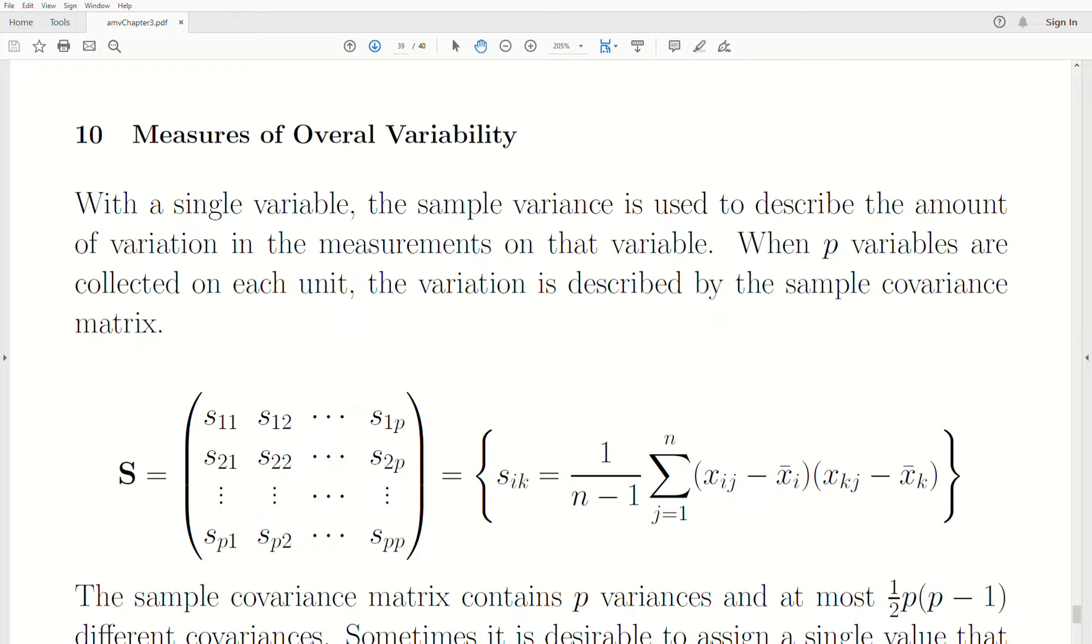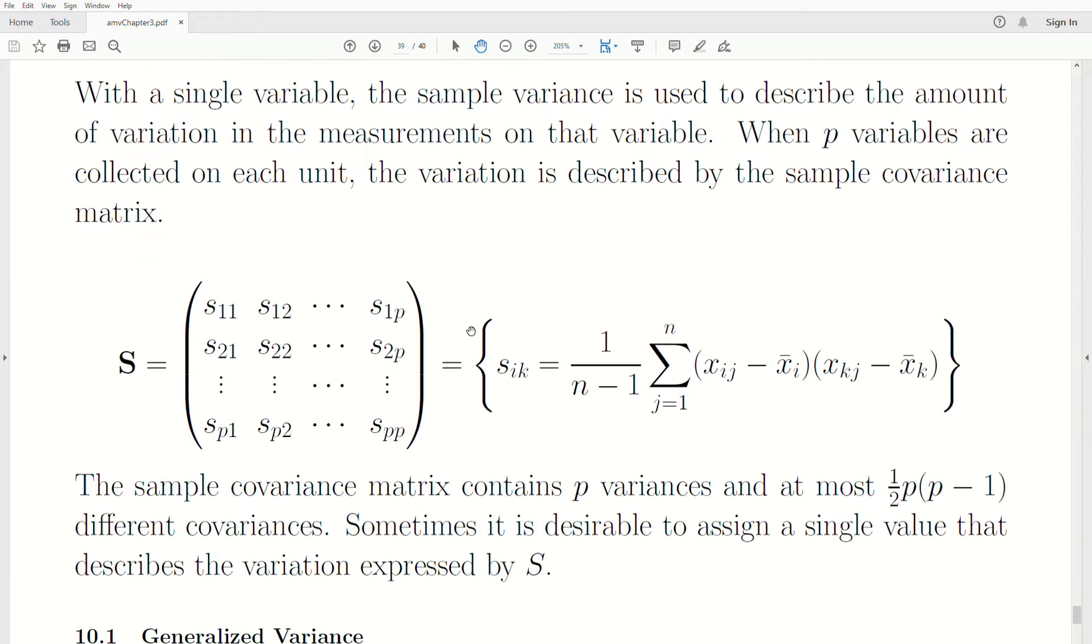With a single variable in univariate analysis, to describe the variability in the data, we use what's called the sample variance, which is the average square difference from the sample mean adjusted for bias. But when we have p variables collected on a unit, so we have a vector of variables, how do we describe the variation? Well, we use the sample covariance matrix.